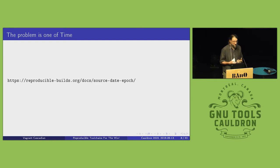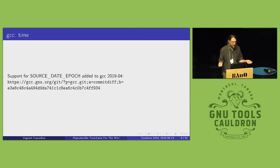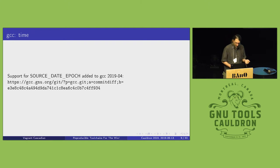A lot of upstreams have started adopting this spec. For example, GCC added support for Source Date Epoch, where you specify the SOURCE_DATE_EPOCH environment variable and any dates that would have been replaced with the current time get replaced with that value. So if you build something with GCC and build it again, you get the same embedded dates.